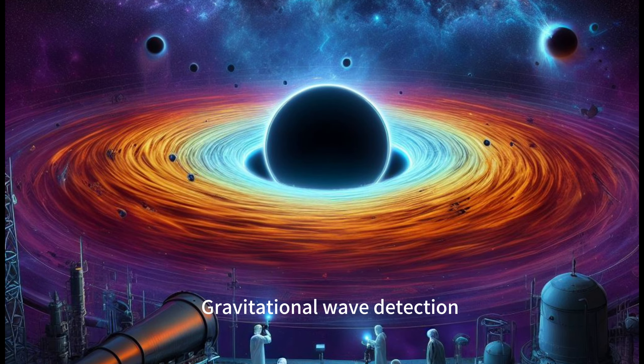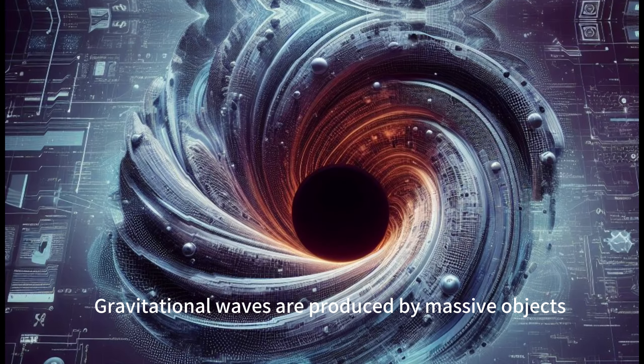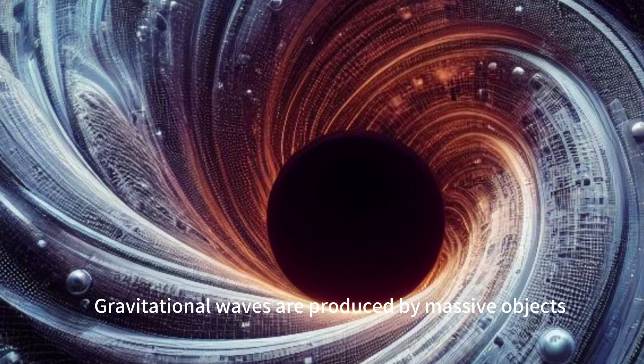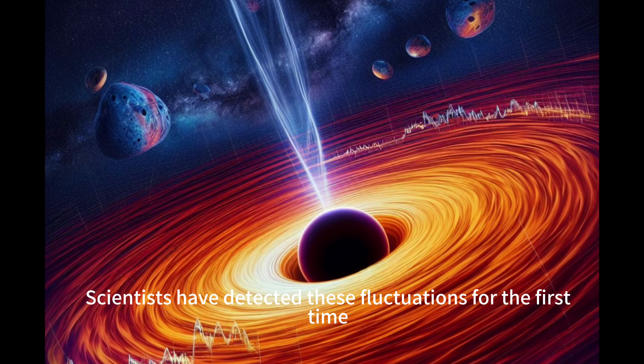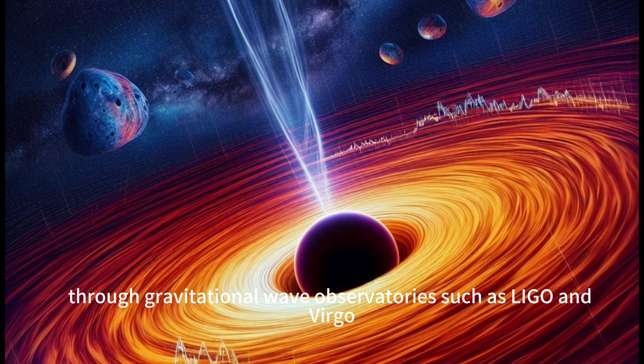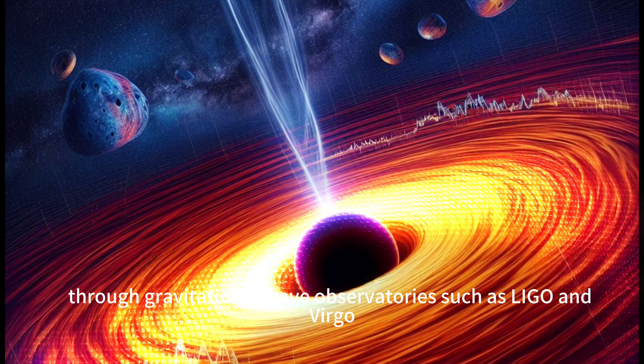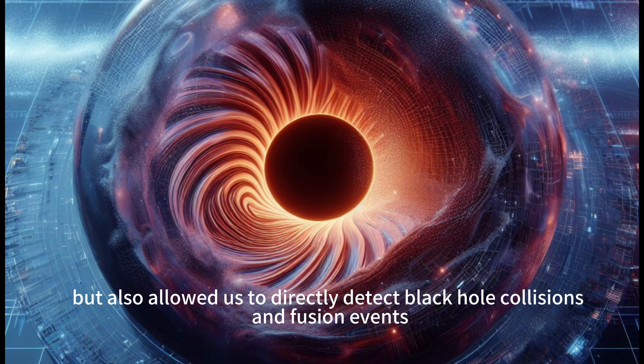In 2015, the historic discovery of gravitational wave observations changed the way we study black holes. Gravitational waves are produced by massive objects, such as black holes or neutron stars, as they accelerate. Scientists have detected these fluctuations for the first time through gravitational wave observatories, such as LIGO and Virgo. This technological breakthrough not only confirmed Einstein's theory of general relativity, but also allowed us to directly detect black hole collisions and fusion events.